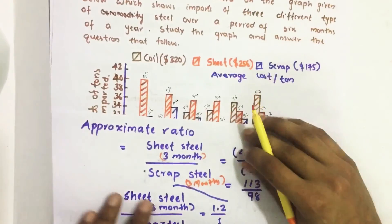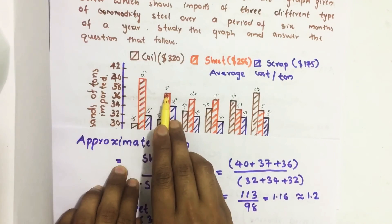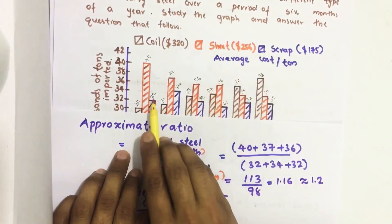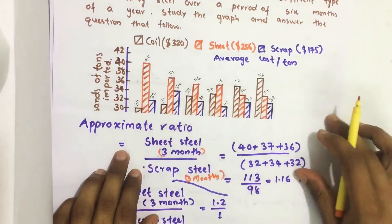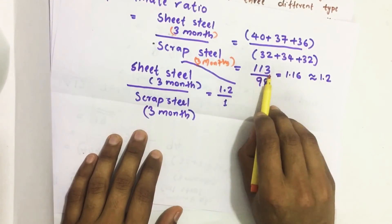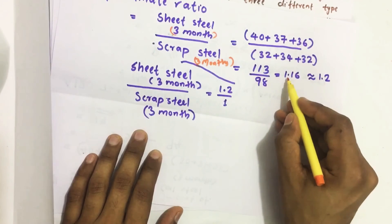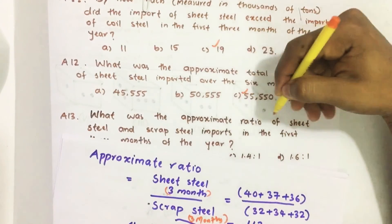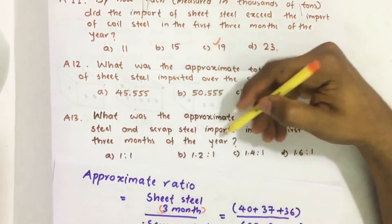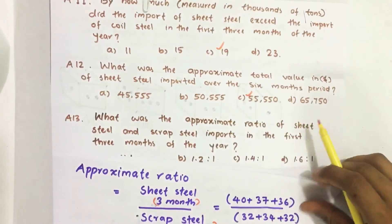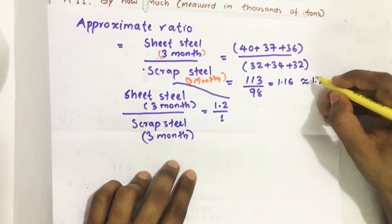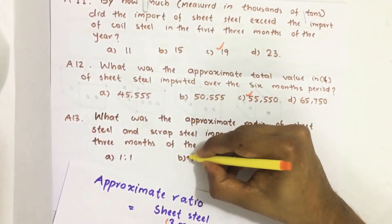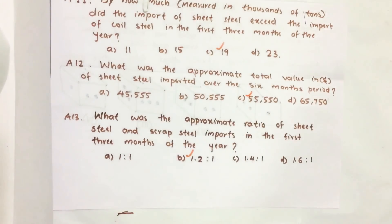From the graph, sheet steel for the first three months is 40 + 37 + 36 = 113, and scrap steel is 32 + 34 + 32 = 98. So the ratio is 113 ÷ 98 = 1.16. Since the question asks for an approximate ratio and 1.2 is nearest to 1.16 among the options, the answer is 1.2 : 1, which is option B.